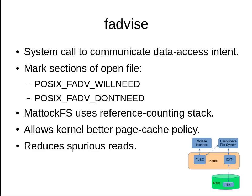A second anti-spurious read facility is the use of the fadvise or fadvise64 system call. MattoCFS keeps track of archive data used by all active tool chains by means of a reference counting stack. Whenever the reference count for a piece of archive data goes from 0 to 1, MattoCFS informs the kernel that the data will likely be accessed again soon. Whenever the reference count hits 0, the kernel is notified that MattoCFS won't be accessing it any time soon, allowing the kernel to be smarter about its page cache handling strategies.